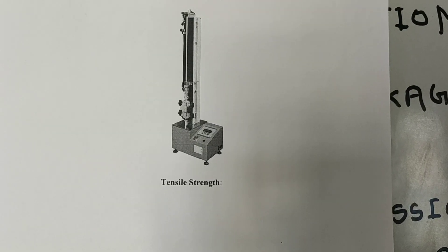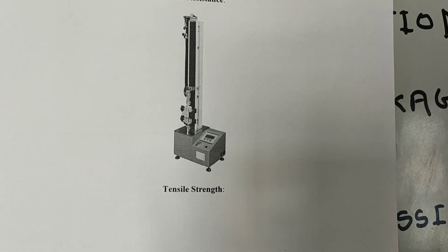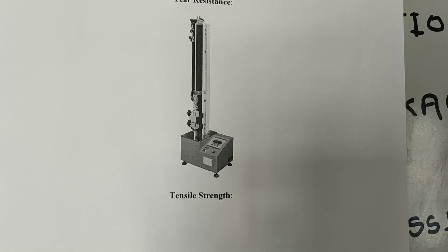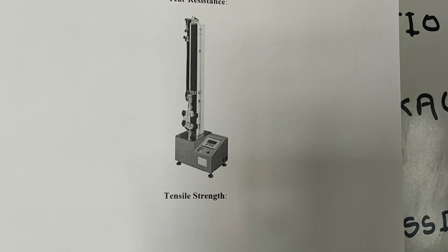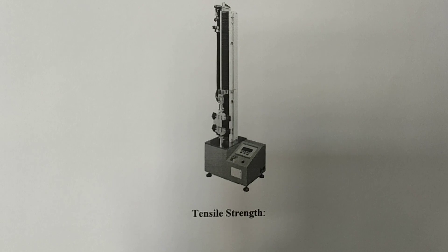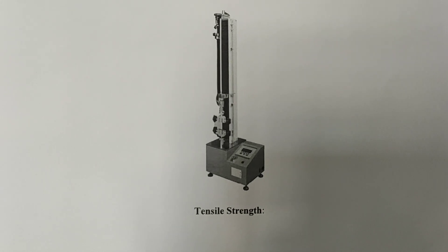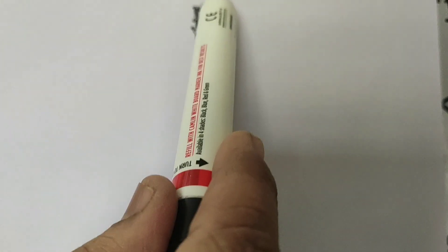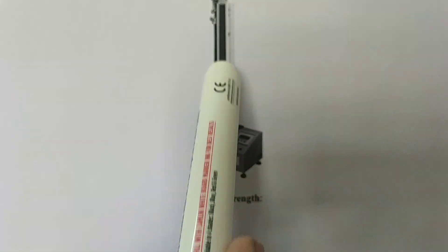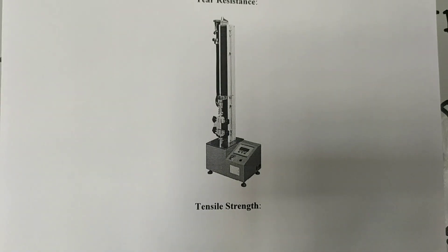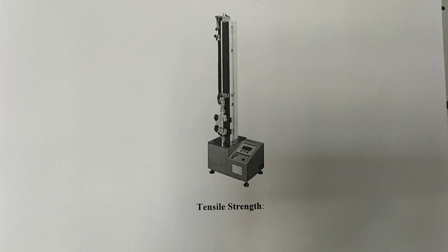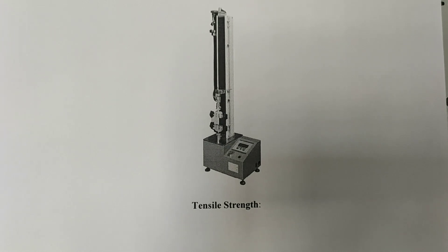The next test is tensile strength. Using this type of instrument, you can calculate the tensile strength. Tensile strength of paper is defined as the force applied parallel to the plane of the specimen, of a specified width and length, under specified conditions of loading.